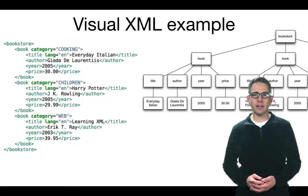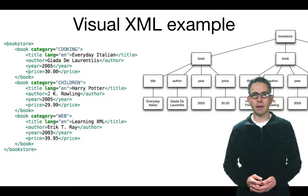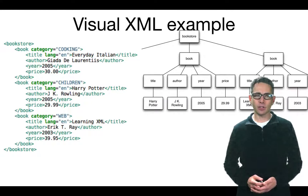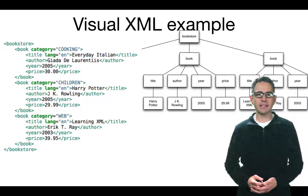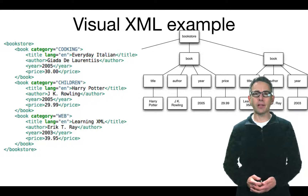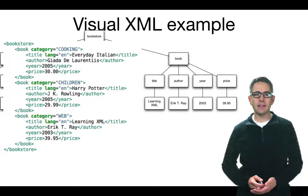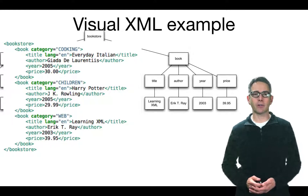A tag with an opening and closing element is the parent of all tags within it. The second book has the same children — title, author, year, and price — forming a tree structure. The last book similarly has title, author, year, and price as children of the book tag, and the book tags are themselves children of the bookstore tag.